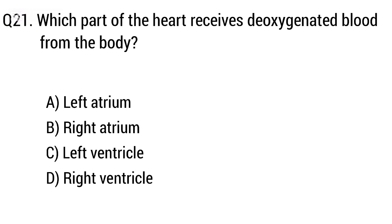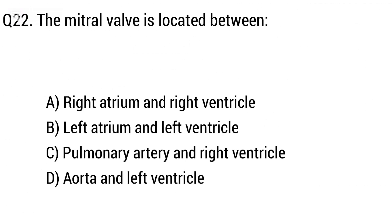Question 21: Which part of the heart receives deoxygenated blood from the body? Option A: left atrium, B: right atrium, C: left ventricle, D: right ventricle. The right answer is option B, right atrium.